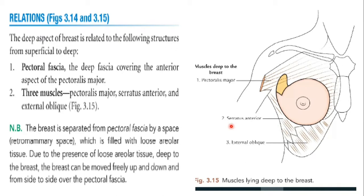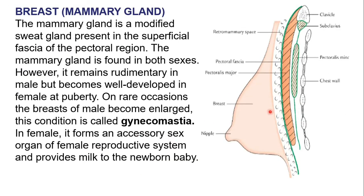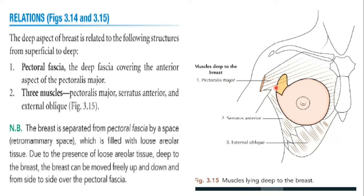The breast is separated from the pectoral fascia by a retromammary space. This retromammary space contains loose areolar tissue or fat. Because of this fat or loose areolar tissue, the breast can move freely up and down and side to side.